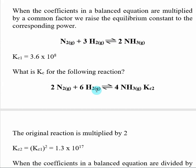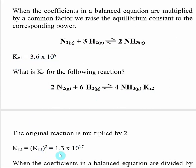Going from the first reaction to the second reaction, we multiplied by 2, so I take the original KC value and raise it to the power of 2. If I multiply by 3, it would be raised to the third power, and so forth. So KC2 for this second reaction is the square of KC1. In this case, the square of 3.6 times 10 to the 8th is 1.3 times 10 to the 17th.